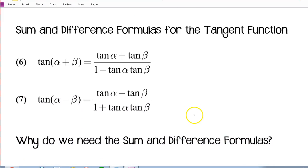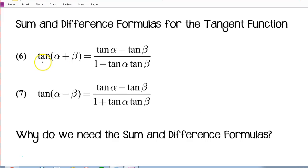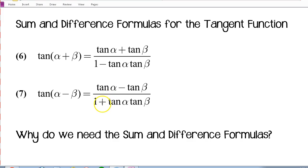We also have sum and difference formulas for tangent, which are a little more complicated. Tangent of alpha plus beta is tan alpha plus tan beta divided by 1 minus the product of tan alpha times tan beta. The plus in the sum corresponds to a sum in the numerator. For tan(α−β), the subtraction corresponds to a difference in the numerator, and then the opposite operation in the denominator — so 1 plus tan alpha times tan beta. So we have addition or subtraction in the numerator, and then 1 minus or 1 plus and a product in the denominator.